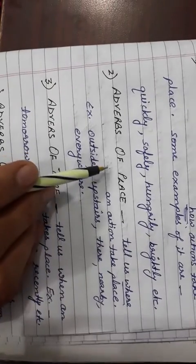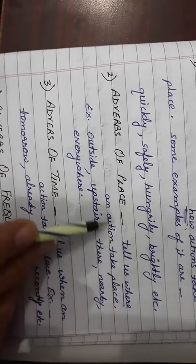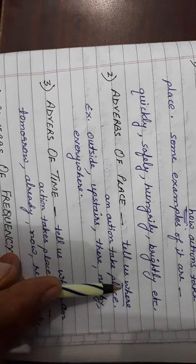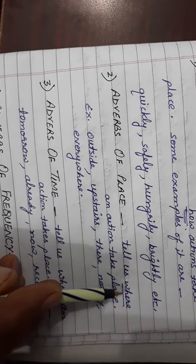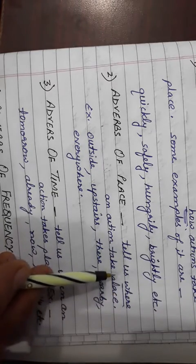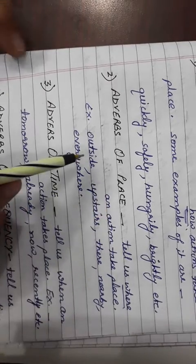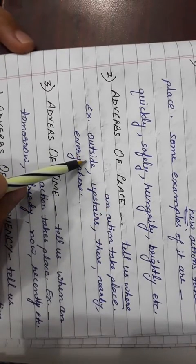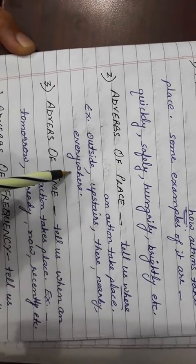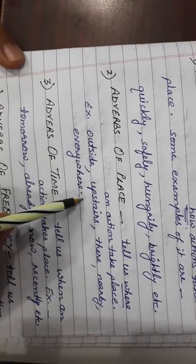Second is adverbs of place. Place tells us where an action takes place. So when words help us identify where the action happened, those words are adverbs of place. For example, outside, upstairs, there, nearby, everywhere.